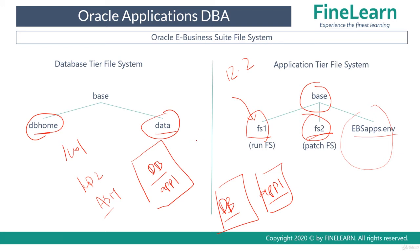Usually when doing maintenance on an Oracle database, you shut down the services. But with this new dual file system feature, you can apply all patches on the patch file system while users remain connected to the run file system — so maintenance activities do not impact live operations. During a patching activity, you apply all required patches on FS2 (the patch file system), and then simply flip the file system from FS1 to FS2. After the flip, FS2 becomes the run file system and FS1 becomes the patch file system.